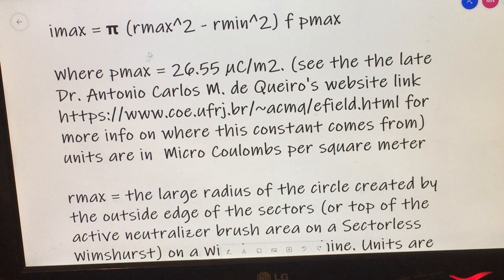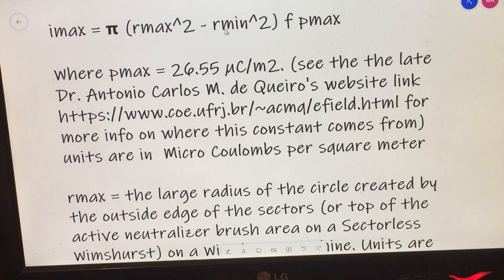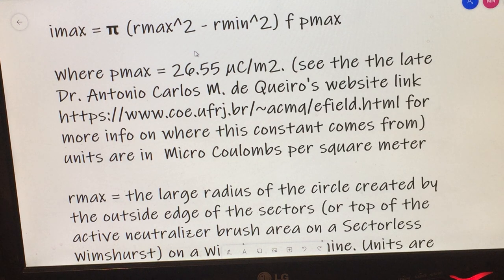So again, like I said, if you're using a round machine like a Bonetti, Wimshurst, Voss machine, Tupler-Holtz machine, this would be the formula for the charge for a round machine. Again, units are meters here. This F here is frequency in terms of turns or revolutions per second, not per minute, revolutions per second. And Pmax is a constant of 26.55 microcoulombs per square meter. That number comes from the constant, which is the permittivity of electricity in a vacuum, which happens to be very close to the permittivity of electricity in open air.